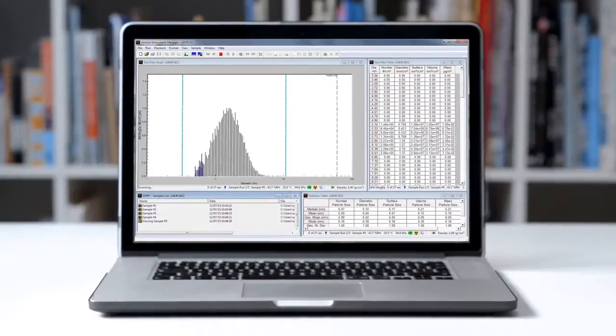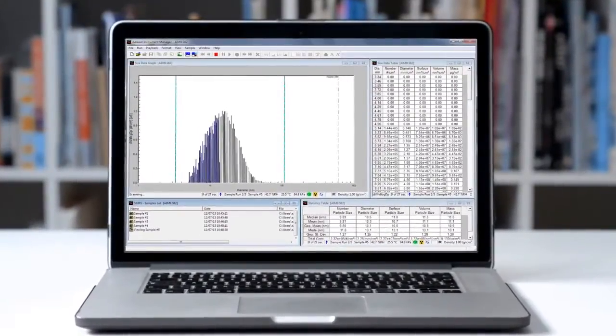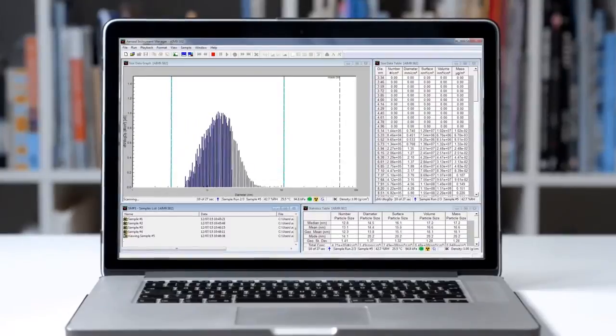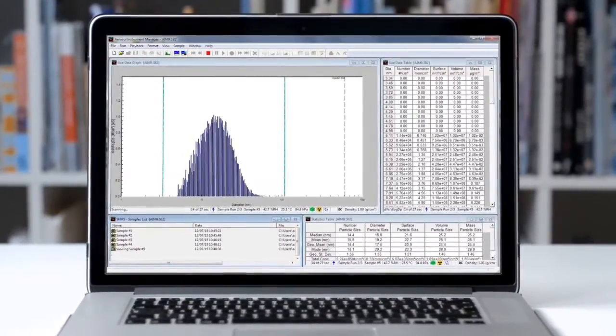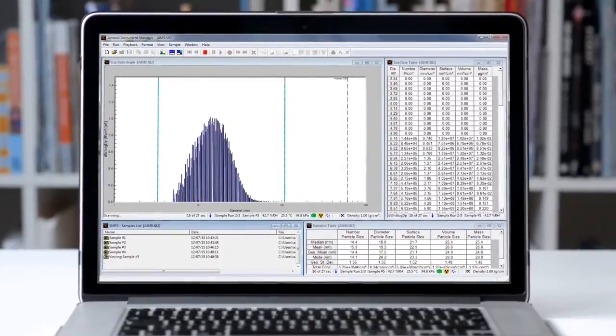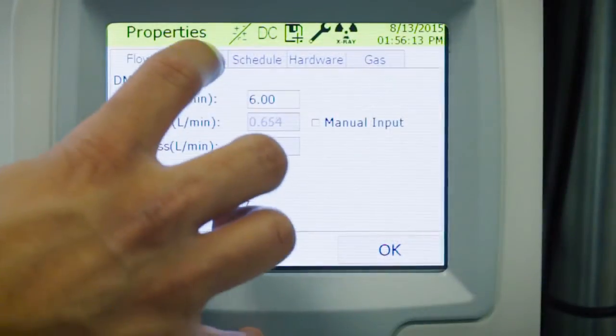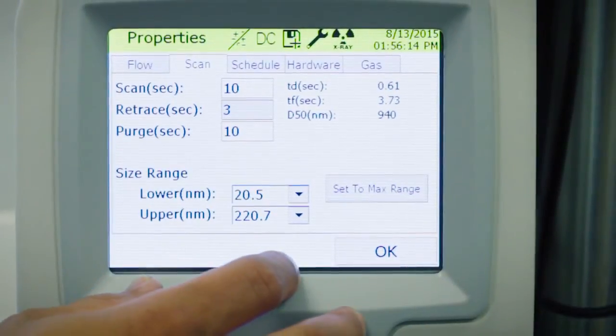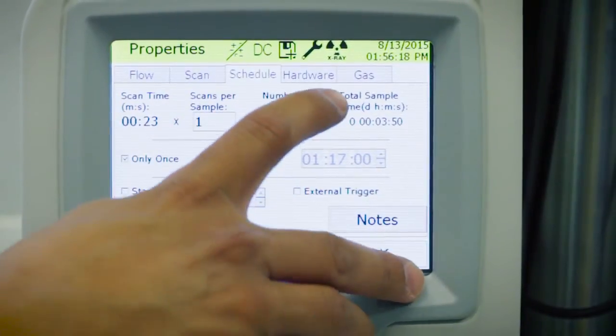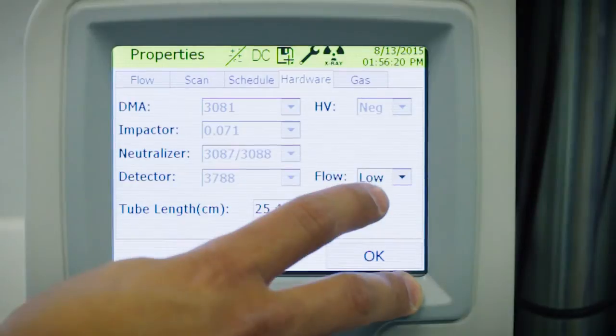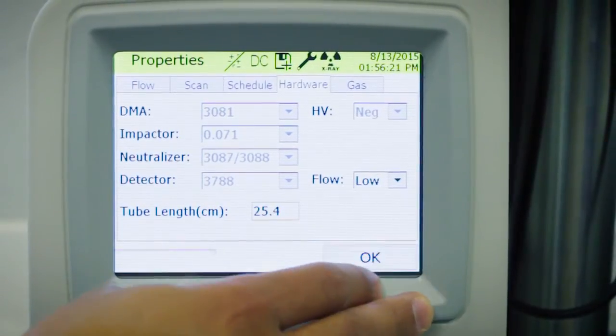By counting the particles passing through the DMA as the classifier scans the range of voltages, it is possible to resolve a size distribution with the help of sophisticated software, TSI's Aerosol Instrument Manager. Additionally, the SMPS system can perform several built-in calculations including diffusion loss correction and multiple charge correction to improve the accuracy of the measurement.